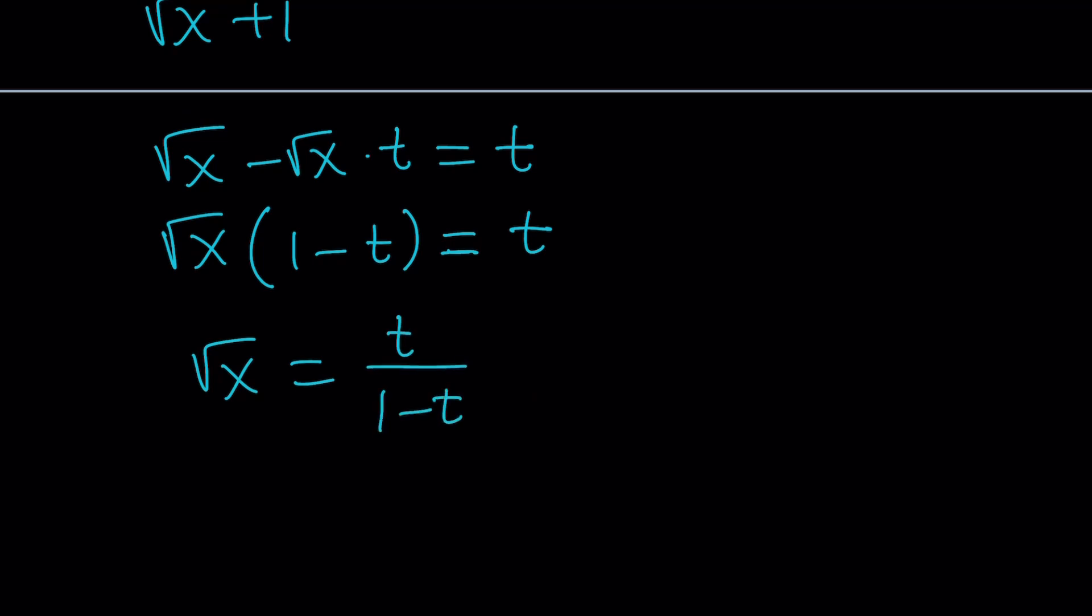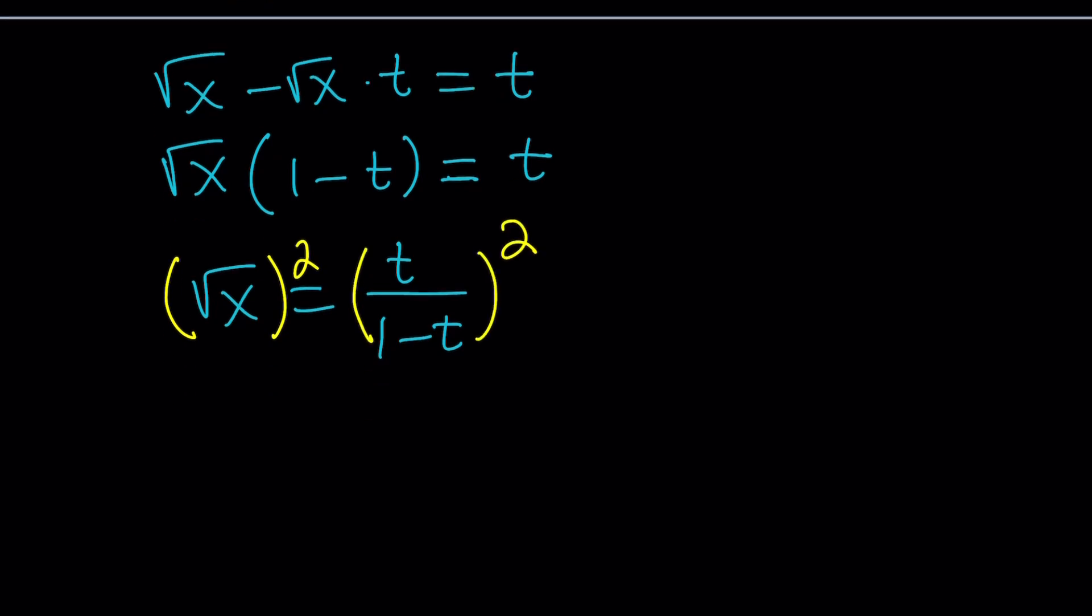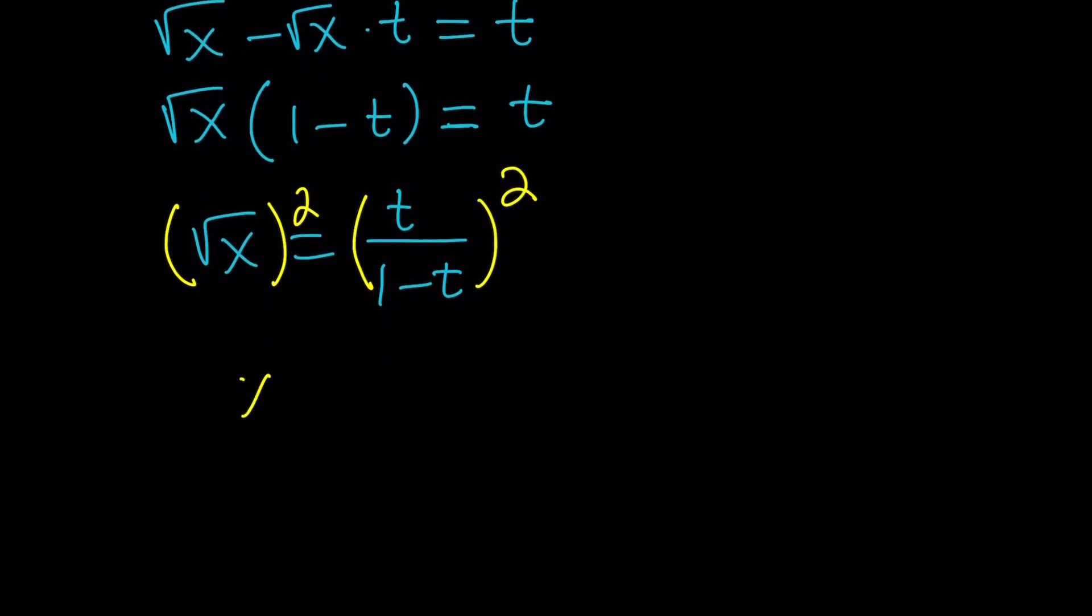But since we're trying to solve for x let's go ahead and square both sides. As you know there is only one square. It's unlike the square roots. We get x equals t squared divided by 1 minus t squared. Obviously you can also expand it and write it as t squared divided by 1 minus 2t plus t squared.